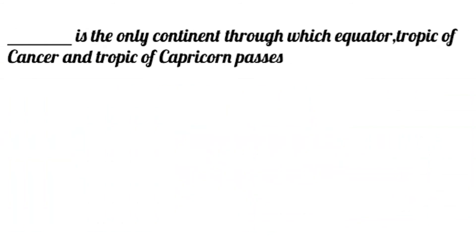Which is the only continent through which the Equator, Tropic of Cancer and Tropic of Capricorn all pass? Africa.